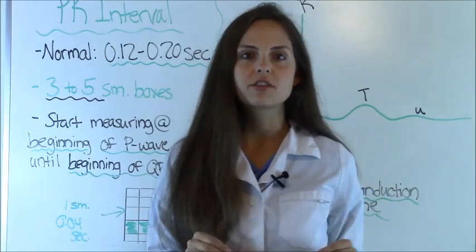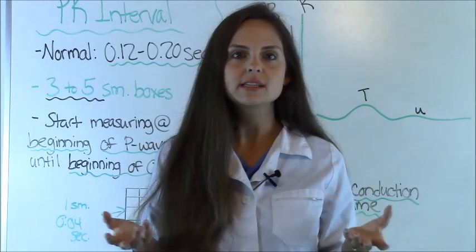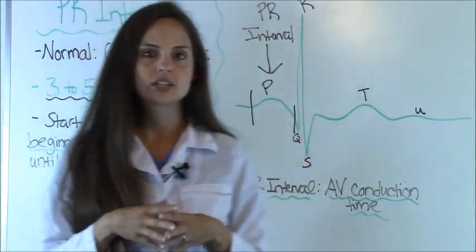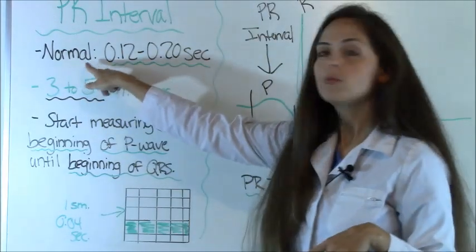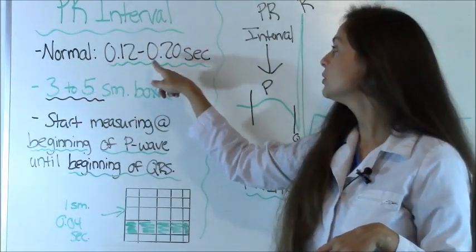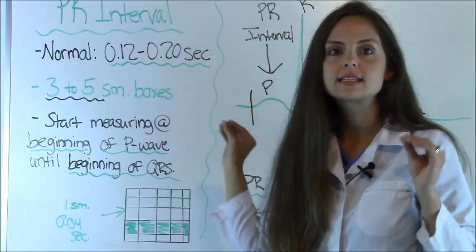First, let's go over the PR interval. What is the PR interval and what does it represent? The PR interval measures AV conduction time. And a normal PR interval is 0.12 to 0.2 seconds long.